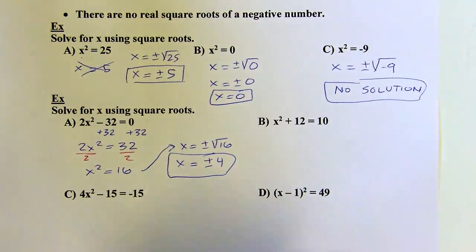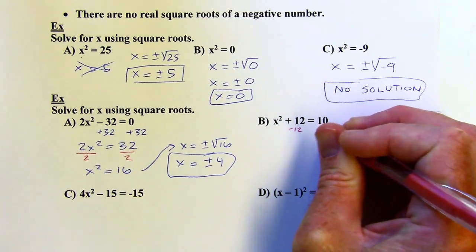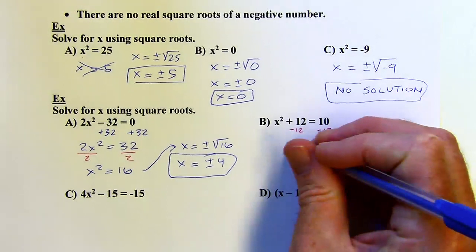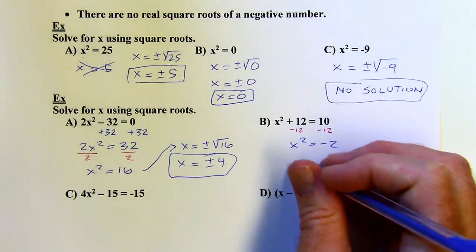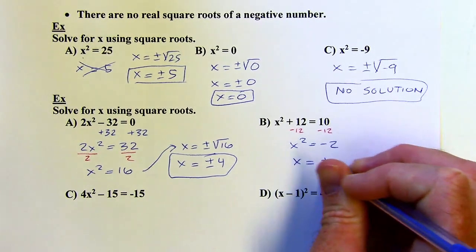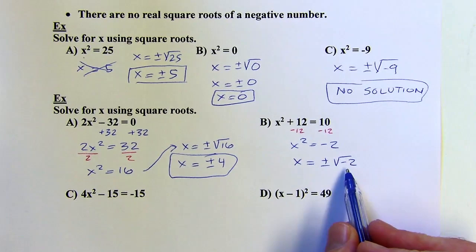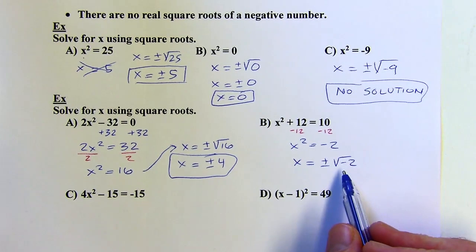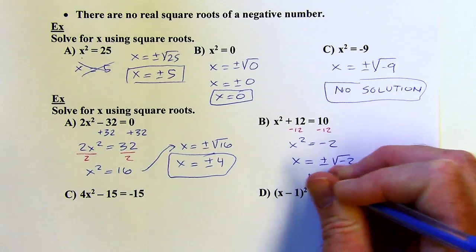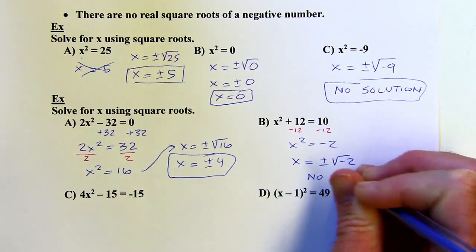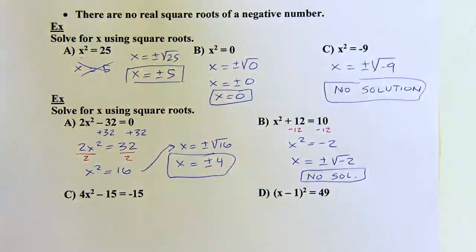Here, all I have to do to isolate x squared is subtract 12. Then I'll take the square root of both sides. But I've got a negative number under the radical, so there is no real square root — no solution any time you get a negative under the radical.